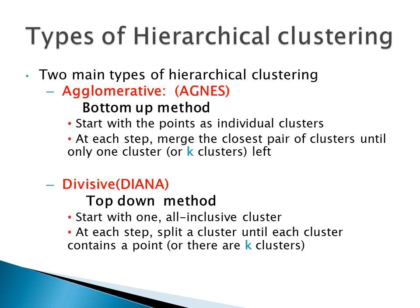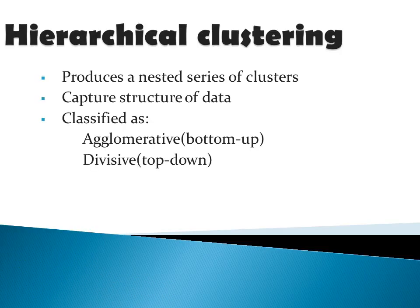In agglomerative clustering, also called the AGNES method, it is a bottom-up strategy. Initially we will be having a set of data points where each point is considered as an individual cluster. At each step we find the closest pair of clusters and merge them together. This continues until we get a single cluster containing all the points. In the divisive or DIANA approach, it is a top-down strategy — initially we have a single cluster containing all points, which we split into smaller clusters based on some splitting criteria, until we get k clusters each containing a single data point.